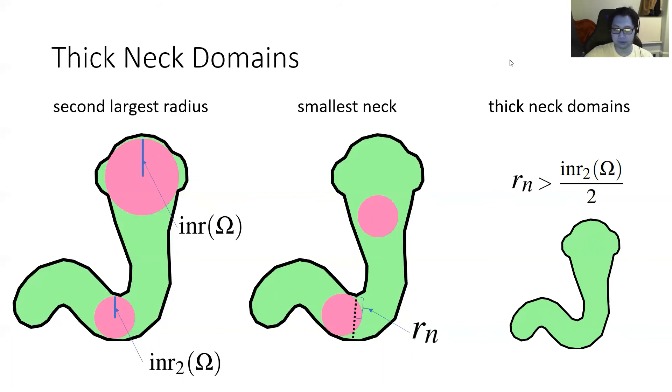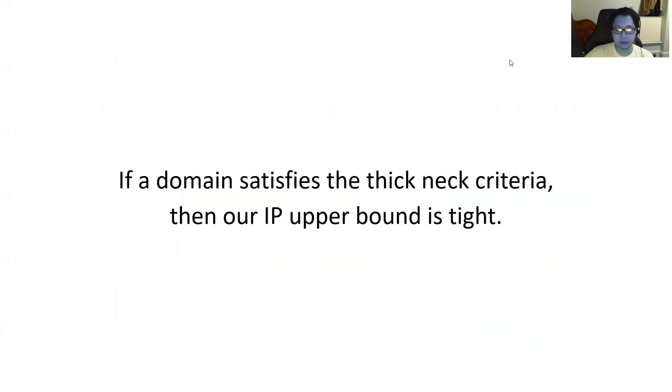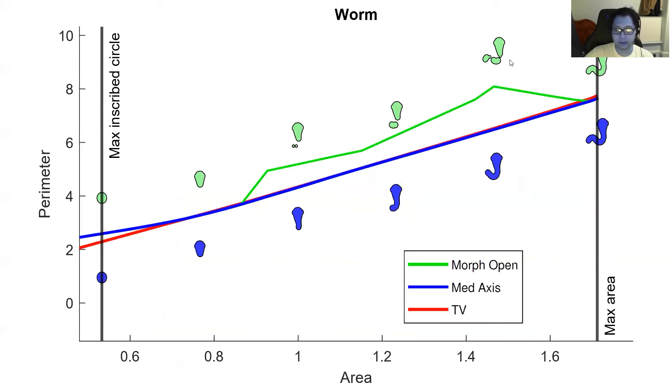It should come as no surprise that the worm domain is a thick neck domain, which is why we used it for visualization. Our result is that if a domain satisfies the thick neck criteria, then our isoperimetric profile upper bound is tight. This means that in practice, for thick neck domains like this worm, we can compute the exact profile. I'll provide some intuition for why this might be the case. But before I do that, let me address the fact that the total variation lower bound appears to sometimes be above both the upper bounds. This is entirely due to discretization error of total variation. Finding a good discretization of total variation is still the subject of ongoing research and can result in slight error in the lower bound.